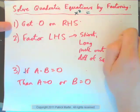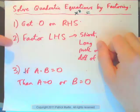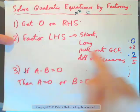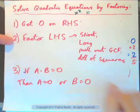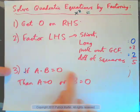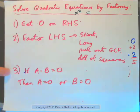The first step is get zero on the right, or the left, it wouldn't matter. Then factor the other side, usually the left hand side, by some method, and then we use the zero product rule. If a times b is zero, a is zero, or b is zero, right?